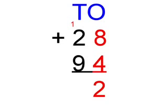Next we add the numbers in the tens column which is 2 plus 9 which equals 11 plus our carried number which equals 12. My answer today is 122.